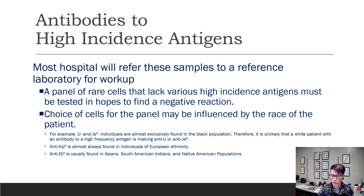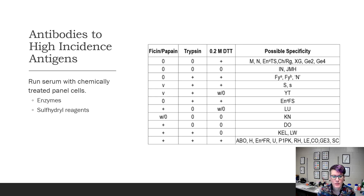Reference labs will have a panel of rare cells that lack various high incidence antigens, and they'll also have access to a lot of different chemical treatments that will help them narrow down what it could possibly be. They also might have genotyping capabilities, which will also help narrow down what the possible antibody could be. The reference lab will run the patient's serum or plasma with chemically treated panel cells, and based on that reaction, it'll help narrow down certain blood group systems that react in that certain way.